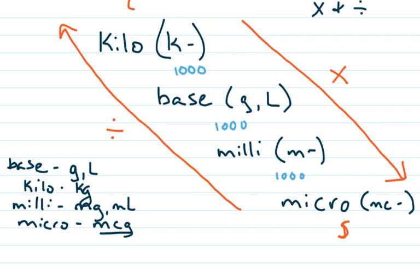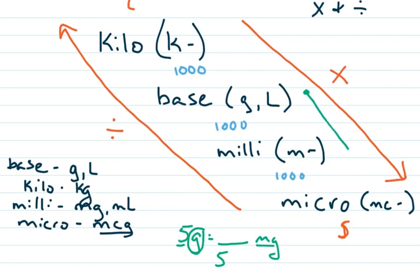For a quick example, let's say you have 5 grams to milligrams. You're starting at grams — that's your base unit, one letter. Going to milligrams means going down, from large to small. So you're going to multiply, and you multiply by the power of a thousand because you're moving one step. So you'd get 5,000. That's multiplying and dividing.